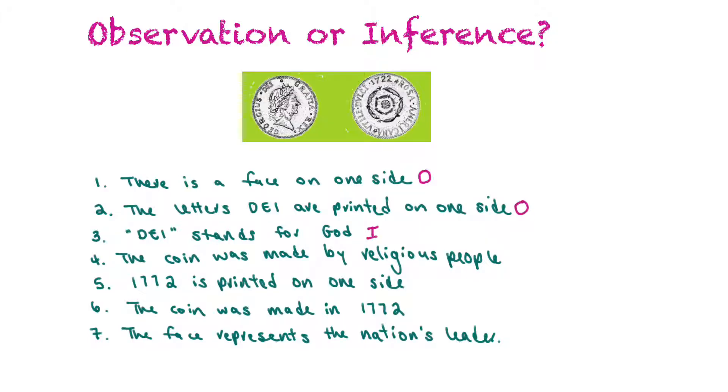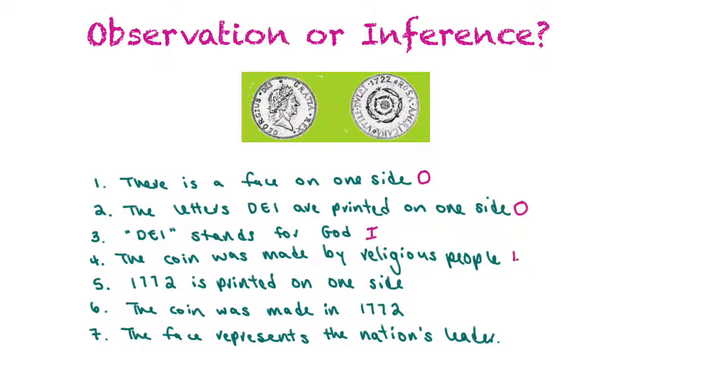The next statement says the coin was made by religious people. Same thing. We don't know that. We can't make an observation that this coin was made by someone who was religious, so that would be an inference.